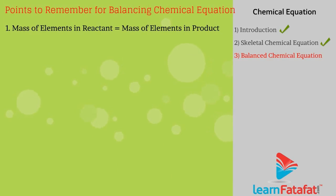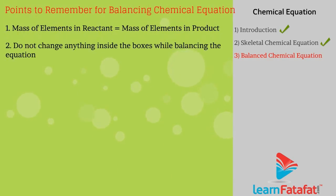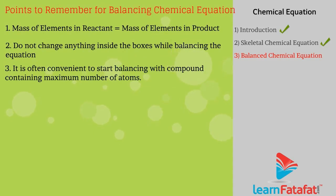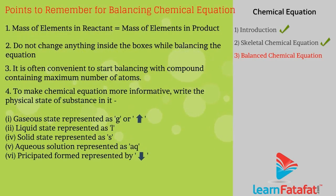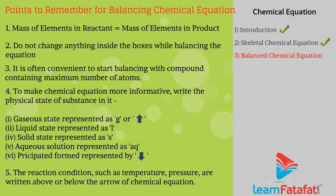First, the mass of elements on the reactant side must equal the mass of elements on the product side. Second, do not change anything inside the boxes while balancing the equation. Third, it is convenient to start balancing with the compound containing the maximum number of atoms. Fourth, write the physical state of each substance to make the equation more informative. Fifth, reaction conditions such as temperature and pressure are written above or below the arrow.